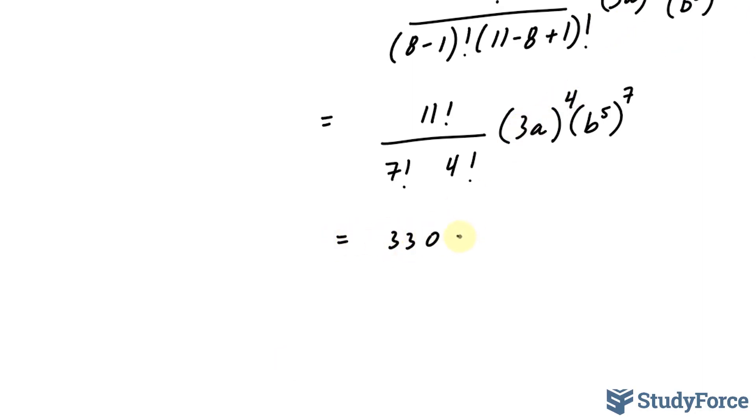3 to the power of 4 is 81. a to the power of 4 is a to the power of 4. And b to the power of 5 raised to 7 is b to the power of 35.